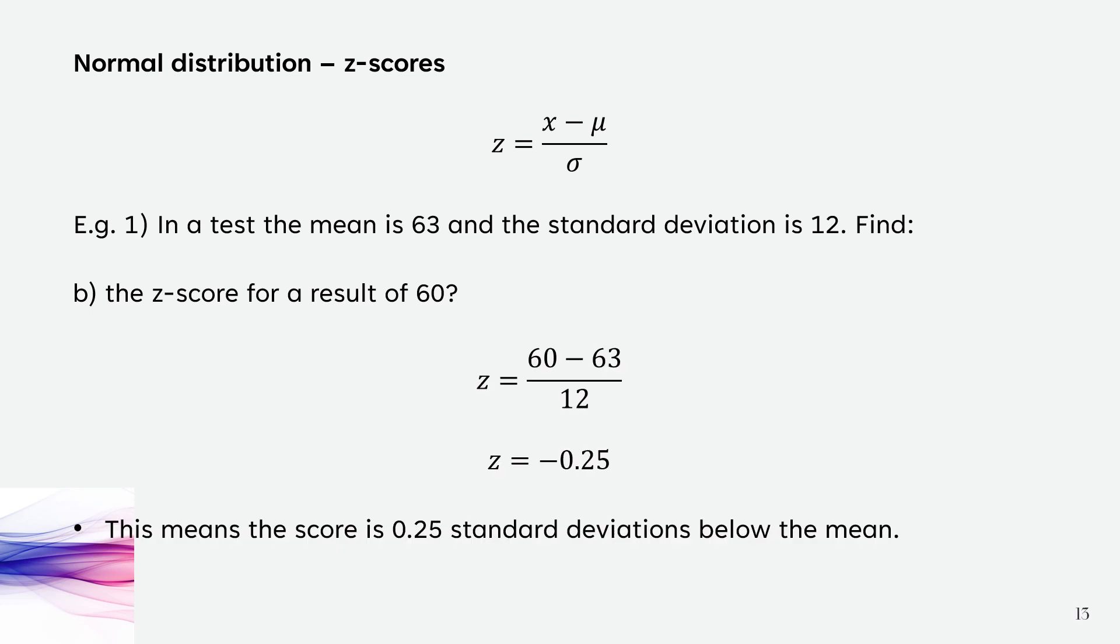Putting 60 in, so 60 is the score, our mean is 63, over the standard deviation which is 12, gets us a z-score of minus 0.25.